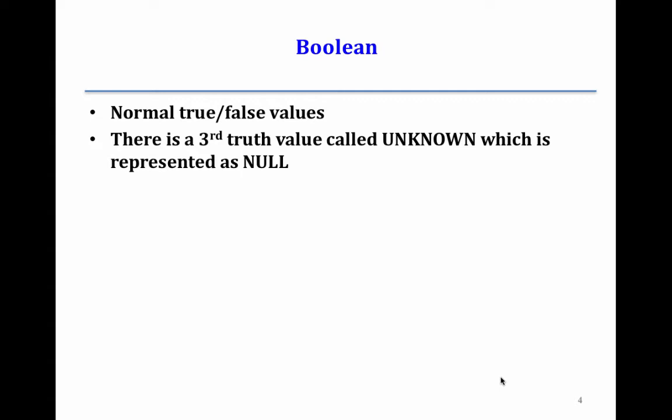The only unusual thing about BOOLEAN is that there's a third truth value called UNKNOWN, represented as NULL. It means we don't know whether something is true or false yet — it will be one or the other, but we don't know. It's like Schrödinger's cat.